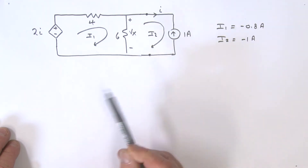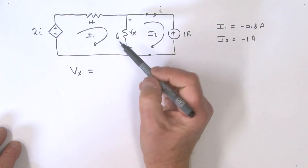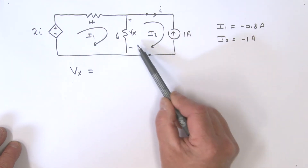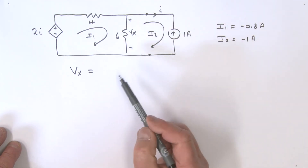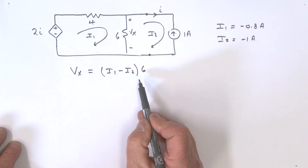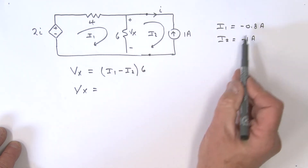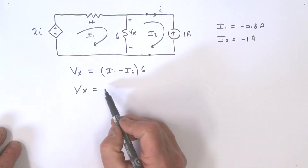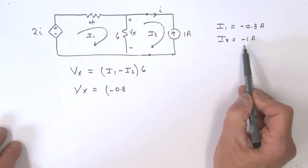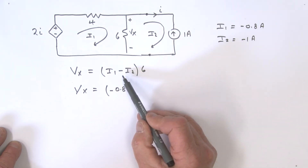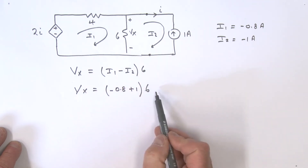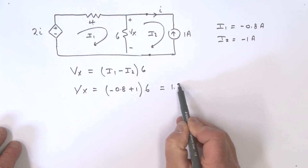Having found I1 and I2, we now find Vx. We know that Vx equals (I1 minus I2) times 6. Substituting: I1 is minus 0.8, and I2 is minus 1, so minus I2 gives plus 1. Therefore Vx equals (minus 0.8 plus 1) times 6, which comes out to 1.2 volts.